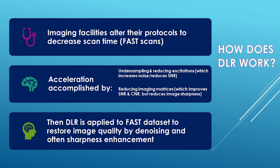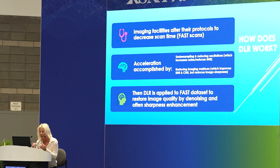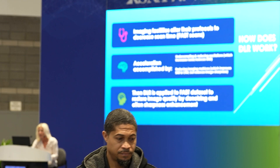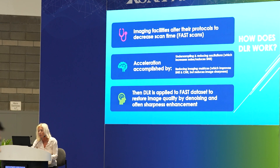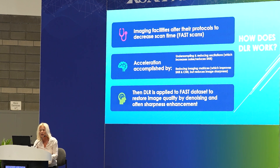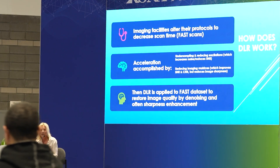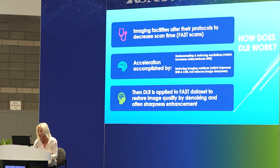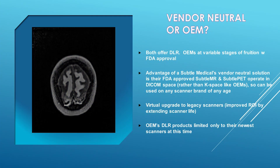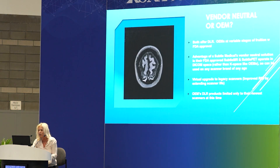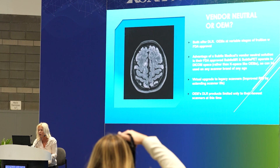How does DLR work? Imaging facilities alter their protocols to decrease the scan time, which we call fast scans. That acceleration can be accomplished by under-sampling and reducing excitations or by reducing the imaging matrices. Then DL reconstruction is applied to that fast data set to restore the image quality by denoising and often by sharpness enhancement. If you're thinking about applying deep learning reconstruction in your imaging enterprise, should you go with a vendor neutral tool or an OEM? Both offer deep learning, but OEMs are at variable stage of fruition with FDA approval — some are approved, some are not yet.